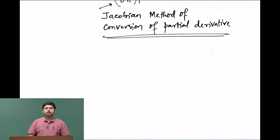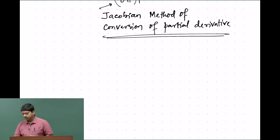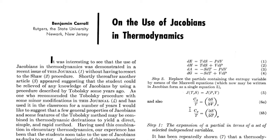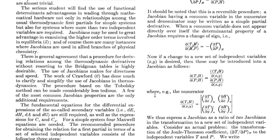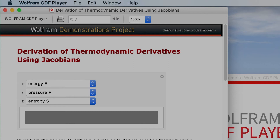This method is not so popular in books. However, there are papers associated with it. I am going to show you a paper on the use of Jacobians in Thermodynamics by Benjamin Carroll, published in the Journal of Chemical Education. I will also show you the conversion of partial derivatives using Mathematica briefly.